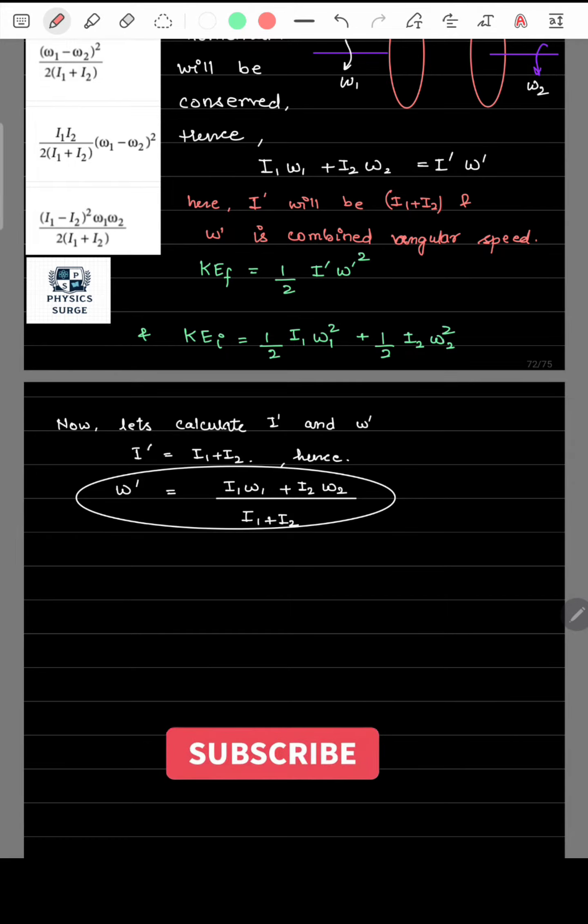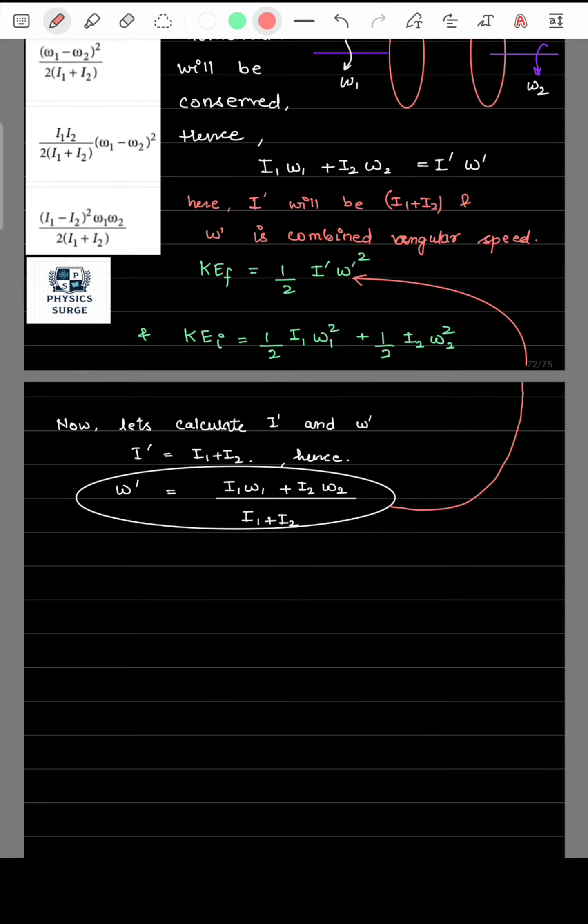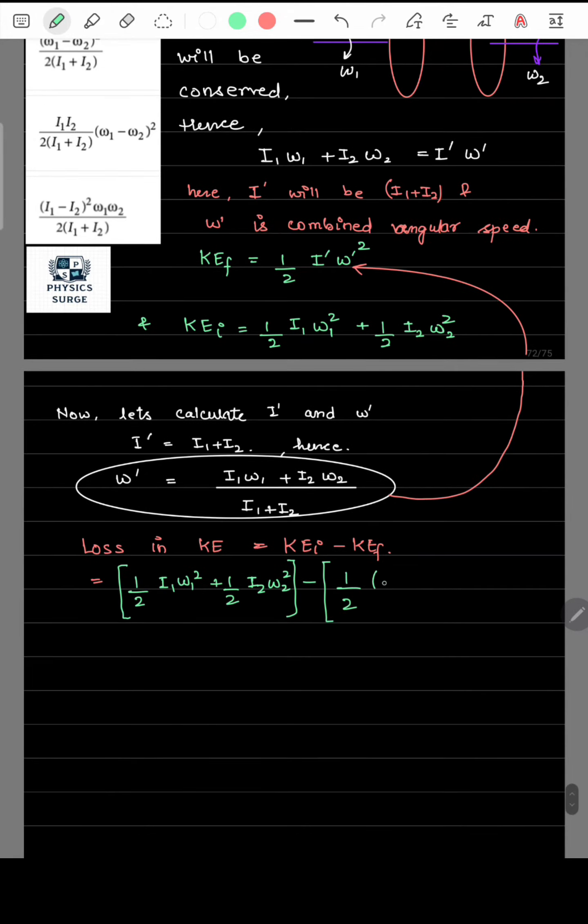Now, putting this value in the kinetic energy final expression, we will calculate the loss in kinetic energy, which can be written as KE initial minus KE final. Putting the respective KE initial and KE final in this expression.